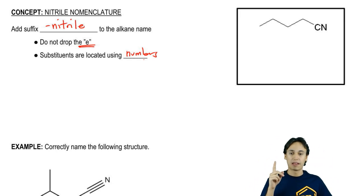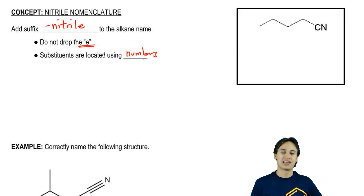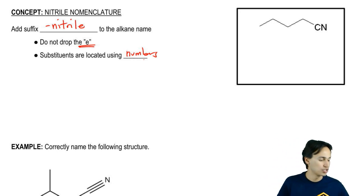In this case, this would be a five-carbon chain that has a nitrile group on it. This would be pentane nitrile.